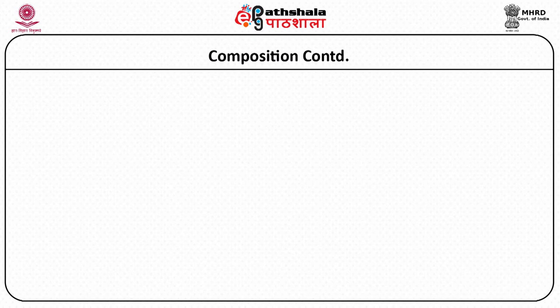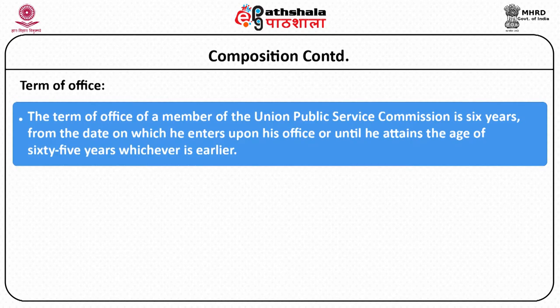The term of office of the chairperson and members of the commission is either 6 years or 65 years of age, whichever is earlier. The phrase 'whichever is earlier' is very important — a person who has completed the age of 60 years but whose 6-year tenure is over cannot continue. Both criteria must be considered when determining the tenure.